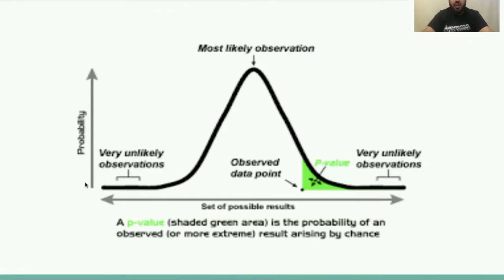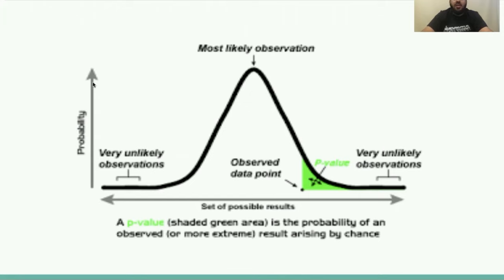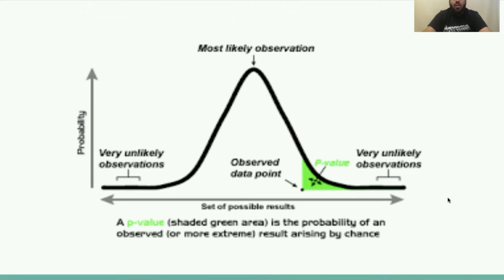This diagram is particularly useful for understanding the p-value in terms of probability. It shows the set of possible results and the probability of getting those results. The most likely observation has the greatest probability, with the two extremes on either side. If our observed data point lies towards one extreme — say, getting 40 heads out of 50 — the p-value is the green shaded area: the probability of an observed or more extreme result arising by chance. Going further to the right or left gives increasingly unlikely observations.